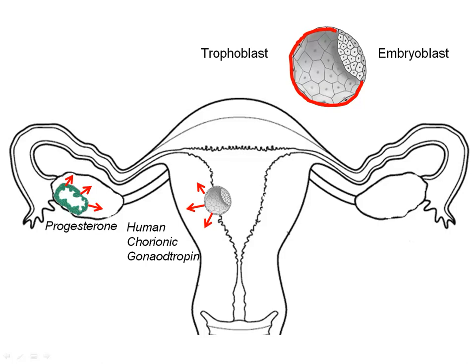This hormone, human chorionic gonadotropin, is also the hormone that is excreted into the urine of the mother after implantation and is detected on a pregnancy test or in a blood sample.